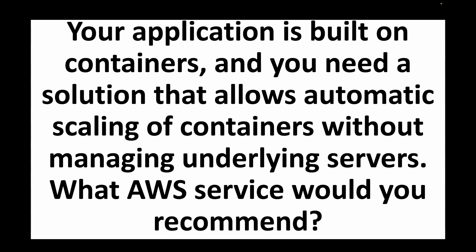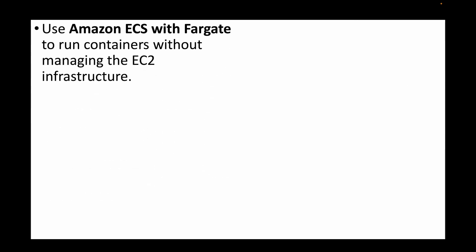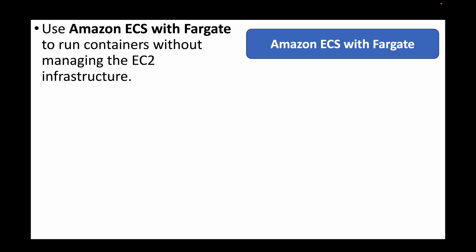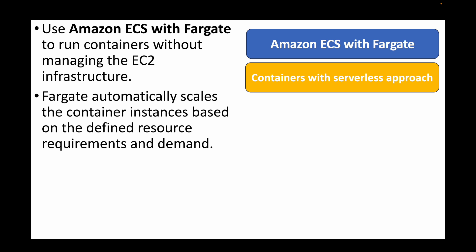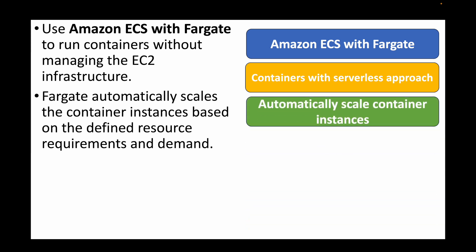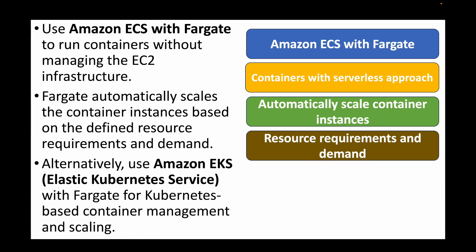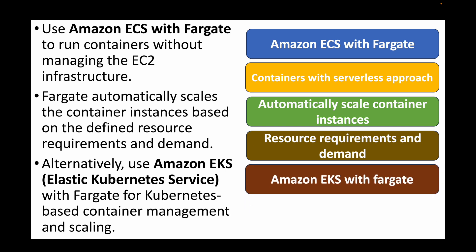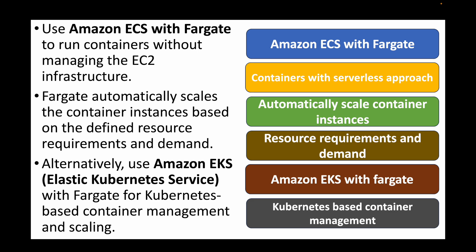The next question is: your application is built on containers and you need automatic scaling without managing underlying servers — what AWS service would you recommend? In AWS, container services include ECS, EKS, and OpenShift. ECS with Fargate provides a serverless approach where you run containers without managing EC2 instances, and Fargate automatically scales container instances based on resource requirements and demand. Alternatively, EKS with Fargate can be used for Kubernetes-based containers.